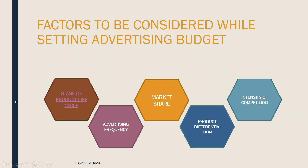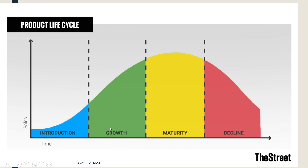So those were the factors to consider when setting advertising budget. Now let's look at the product life cycle briefly. It has four stages mainly — introduction, growth, maturity, and decline. The x-axis is time and the y-axis is sales, and we see a graph going in the shape of a curve.